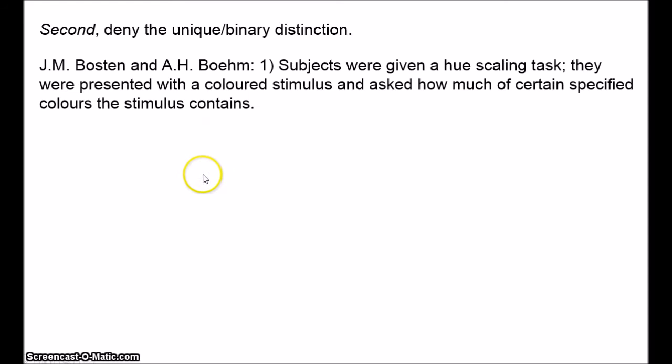There is actually empirical evidence against the unique binary distinction. Boston and Bohm, in their paper 'Empirical Evidence for Unique Hues', present two experiments that challenge the distinction. The first uses hue scaling: subjects are presented with coloured stimuli and asked how much of each specified colour the stimulus contains. So if shown orange, you might say it contains 60% red and 40% yellow — a slightly reddish orange. The traditional argument for unique hues is that some stimuli are judged to contain one primary colour and not any others — for instance, there is a green where subjects report just green, but not yellow, blue, or red.